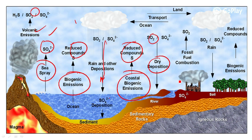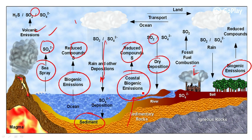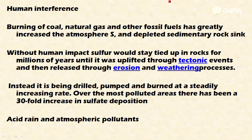Other sources of sulfur include industries, biogenic emissions, and fossil fuel emissions, all of which contribute sulfur to the ecosystem. The sedimentary source of sulfur is also present, and upliftment of land, weathering, erosion, and runoff also occur in the sulfur cycle. Human beings are also interfering in the sulfur cycle by burning coal, natural gas, and other fossil fuels, which has greatly increased the amount of sulfur in the atmosphere.